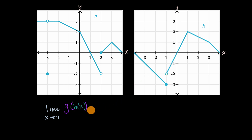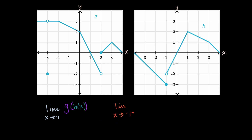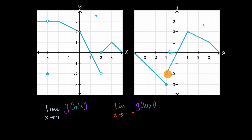What we can do is take right-handed and left-handed limits. Let's first figure out what is the limit as x approaches negative one from the right-hand side of g of h of x. To think about that, what is the limit of h as x approaches negative one from the right-hand side? As we approach negative one from the right-hand side, it looks like h is approaching negative two.